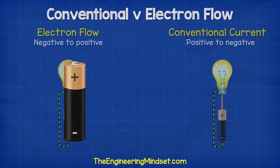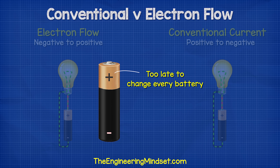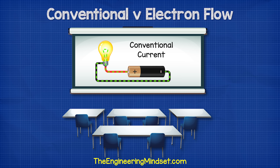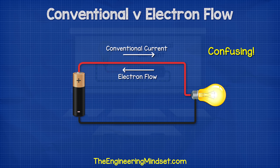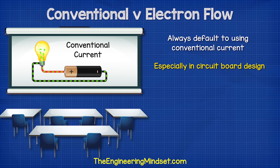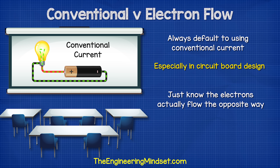It's also a little bit too late now to change the names of the terminals of all the batteries in the world. So everyone just kind of ignored this and we continue to teach and use conventional current. Some books might show you both. So you need to remember that whenever we talk about electricity, or whenever we design a circuit or even look at an electrical circuit drawing, we always default and assume conventional current is occurring. But engineers and scientists know that the electrons are actually flowing the other way.